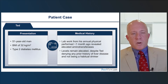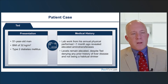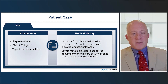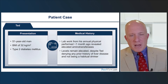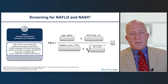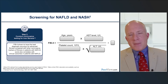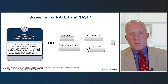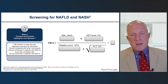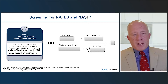Let's discuss a case. Ted is a 51-year-old male with type 2 diabetes and a BMI of 32. Lab work from his annual physical shows elevated transaminases, which are still elevated at today's follow-up visit. He denies any history of liver disease or habitual alcohol intake. A FIB4 score is an excellent first step here — you've already ruled out alcohol and baseline liver disease, and his transaminases are only mildly elevated, so viral hepatitis is less likely.